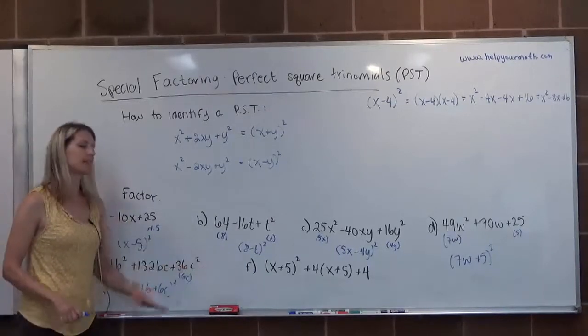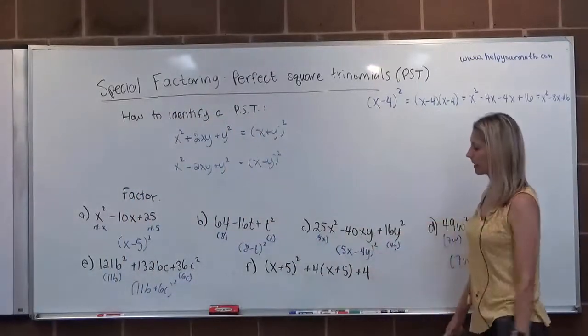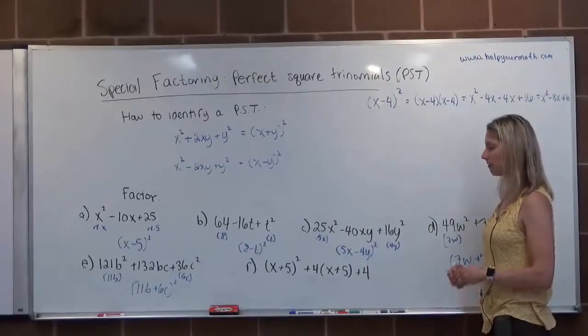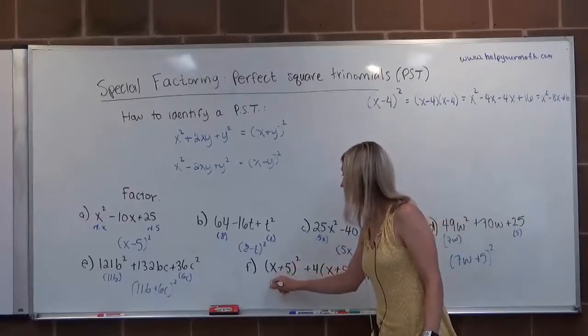Last but not least, we had to mix it up. Now we have a first term of X plus 5 quantity squared plus 4 times X plus 5 plus 4. So is X plus 5 quantity squared a perfect square? Absolutely. Its root is X plus 5.